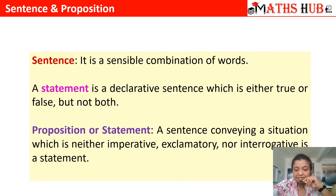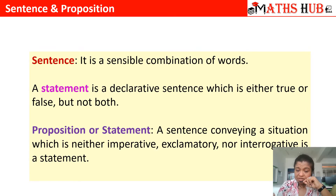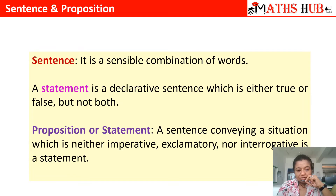A statement is a declarative sentence which is either true or false, but not both. It is always declaring something — a declarative sentence that can be either true or false. It is universally true or universally false, but it cannot be both at the same time. The synonym for statement is also called a proposition.